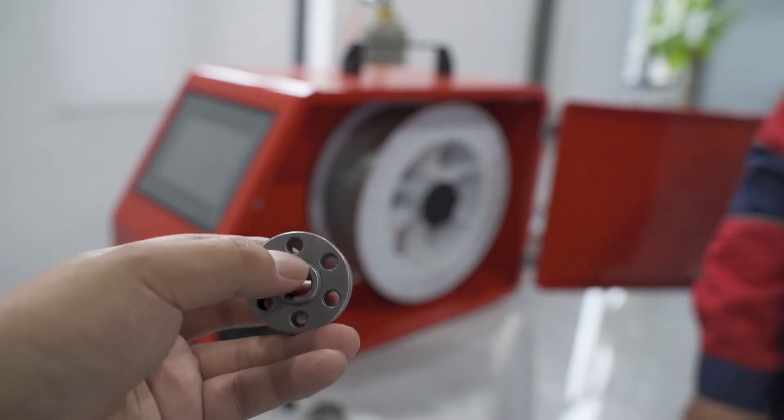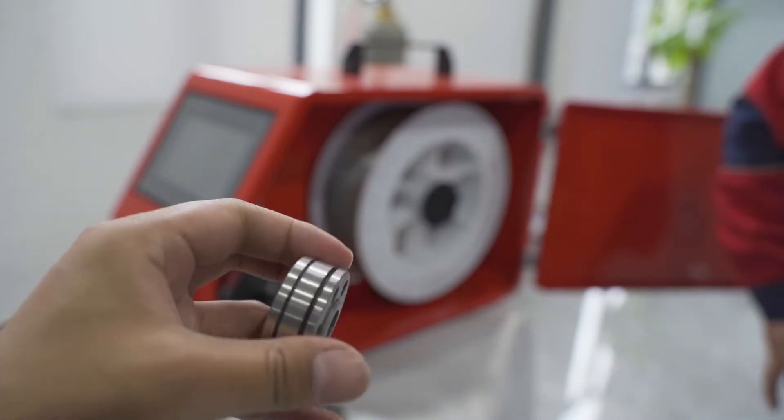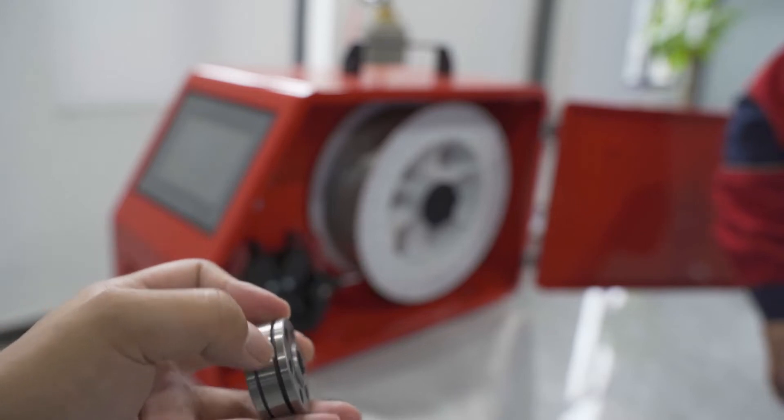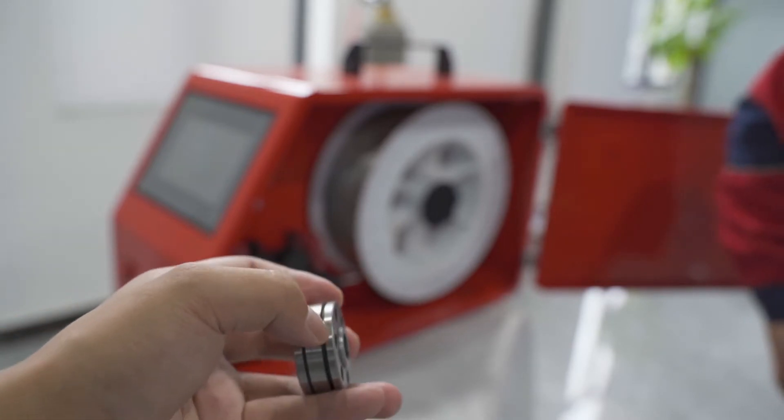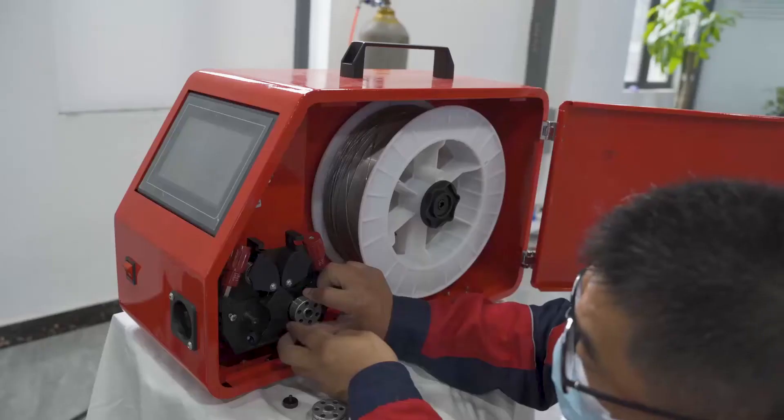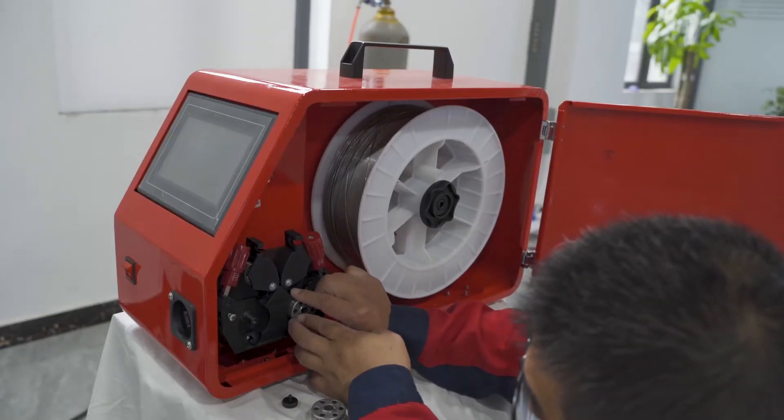You can see 1.2mm on this wheel. This means the width of this place is 1.2mm.